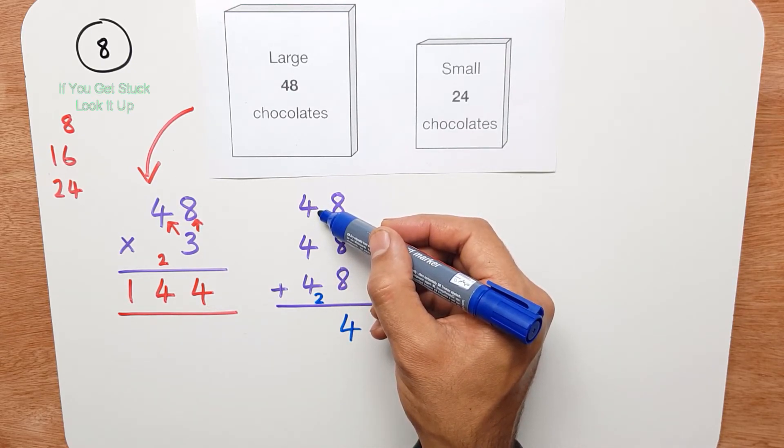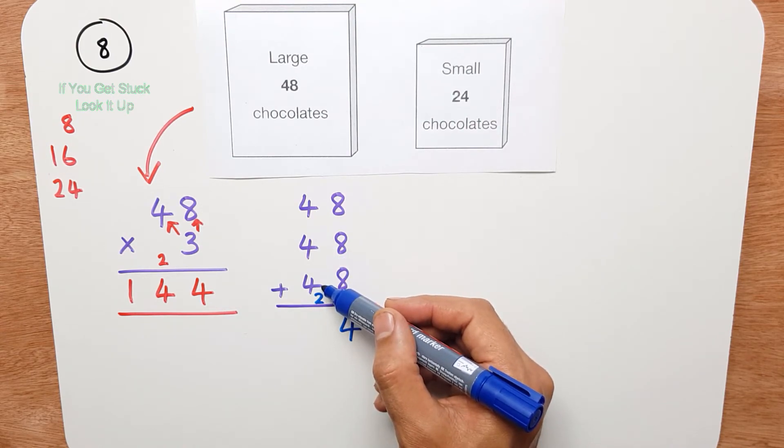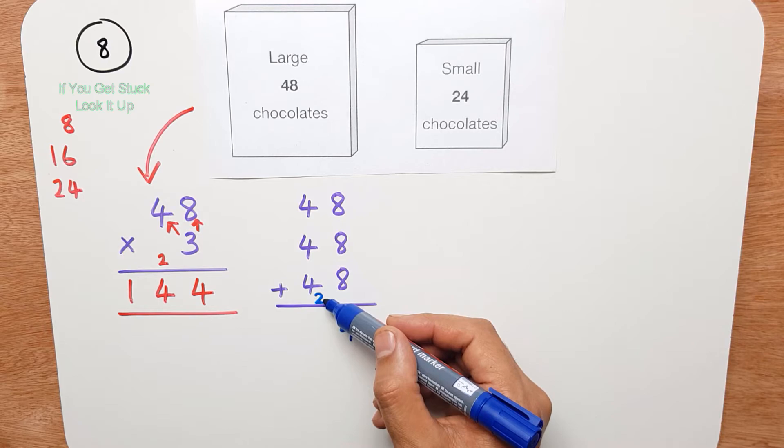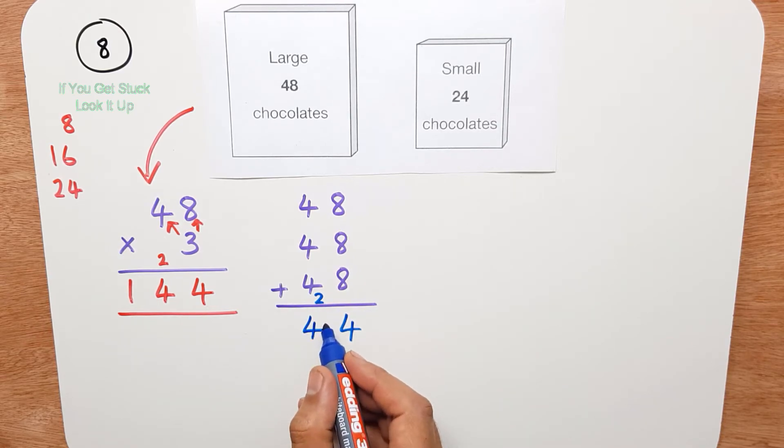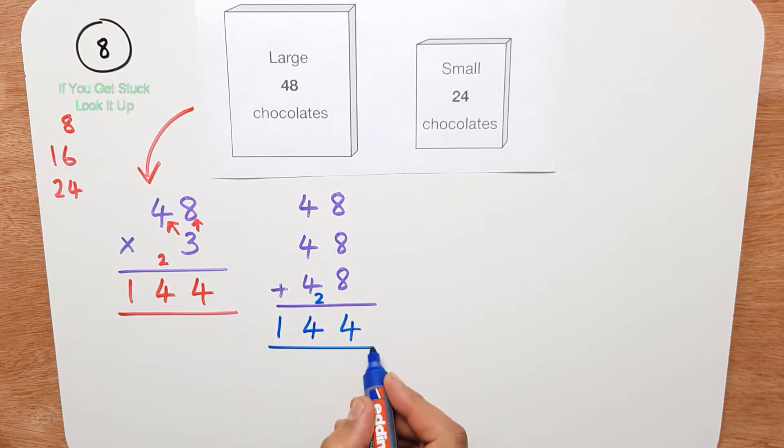Now we're in the tens column, 4 add 4 is 8, add 4 is 12, add the 2 is 14. So again, we put the 4 down, and carry the 1 over to the next column. And I can write that straight down, because we've finished. So whichever way you decide to do it, it gives the same answer.